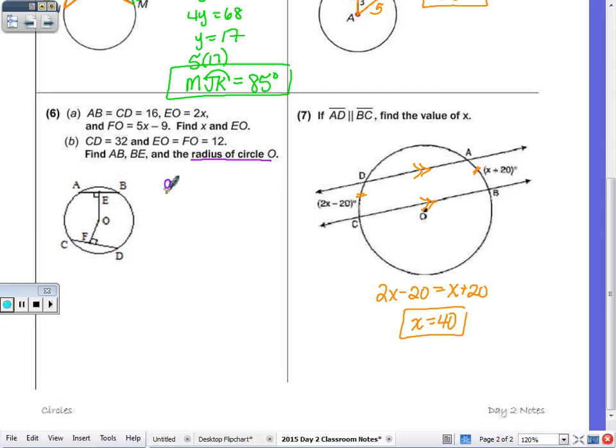So in part A, let's do that in purple. This statement here, AB is equal to CD, which is 16. That's telling me that the chords themselves are congruent. And if the chords are congruent, then they're the same distance from the center. So this point here, O, the center, that means that E to O is equal in length to O to F. So given the length, EO is 2X, I set that equal to FO, which is 5X minus 9. Subtract the 5X, we get negative 3X equals negative 9. Divide by negative 3, and X equals 3. So X is 3, and then EO, which is 2X, 2 times 3, EO is going to be 6.